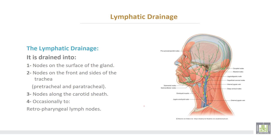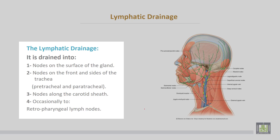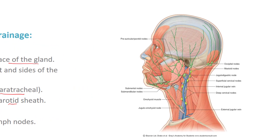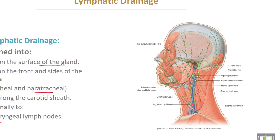Lymphatic drainage of the thyroid gland: it drains into nodes on the surface of the gland, nodes on the front and sides of the trachea — the paratracheal lymph nodes — nodes along the carotid sheath, and occasionally to retropharyngeal lymph nodes.